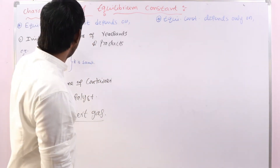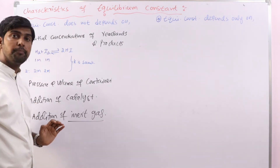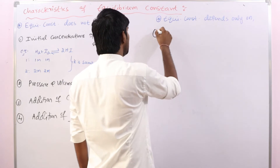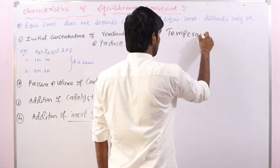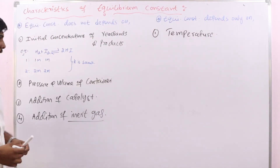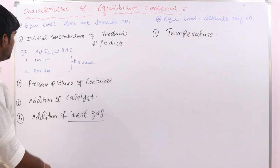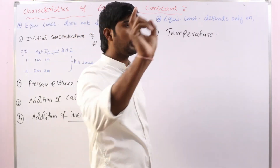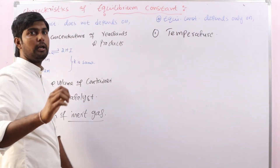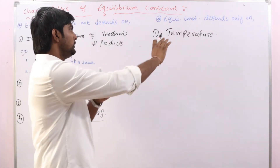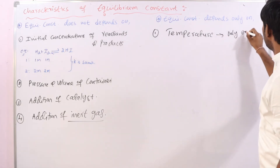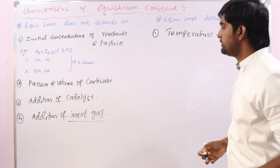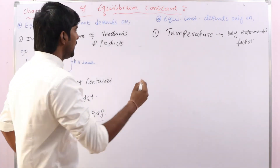Now, which factors influence the equilibrium constant value? The first and very important one is temperature. By maintaining constant temperature, whatever changes you do — all four types of changes — there is no change in K value. But once you change the temperature, the numerical value of K changes immediately. Temperature is the only experimental factor which influences the equilibrium constant value.